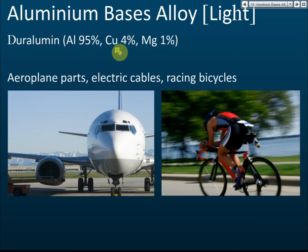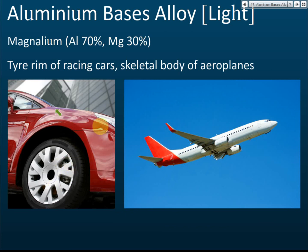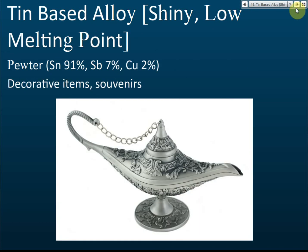Aluminium-base alloys: duralumin contains aluminium, copper, and magnesium, and is used for aeroplane parts, electric cables, and racing bicycles — we use aluminium to make them as light as possible. Magnelium contains magnesium and aluminium, and is used to make the skeletal bodies of aeroplanes and the rims of racing cars, including some expensive cars.